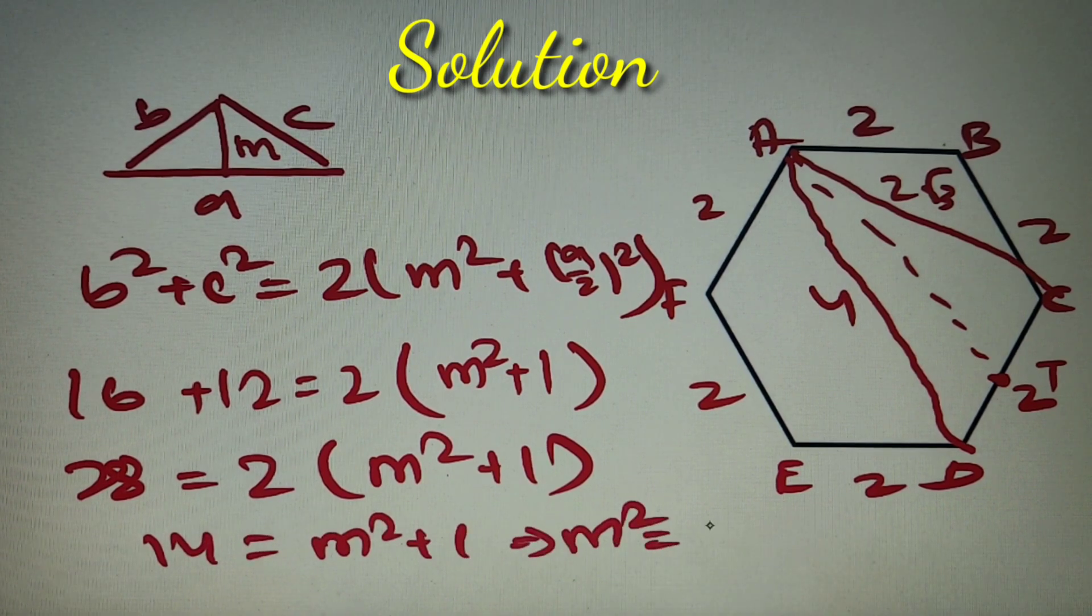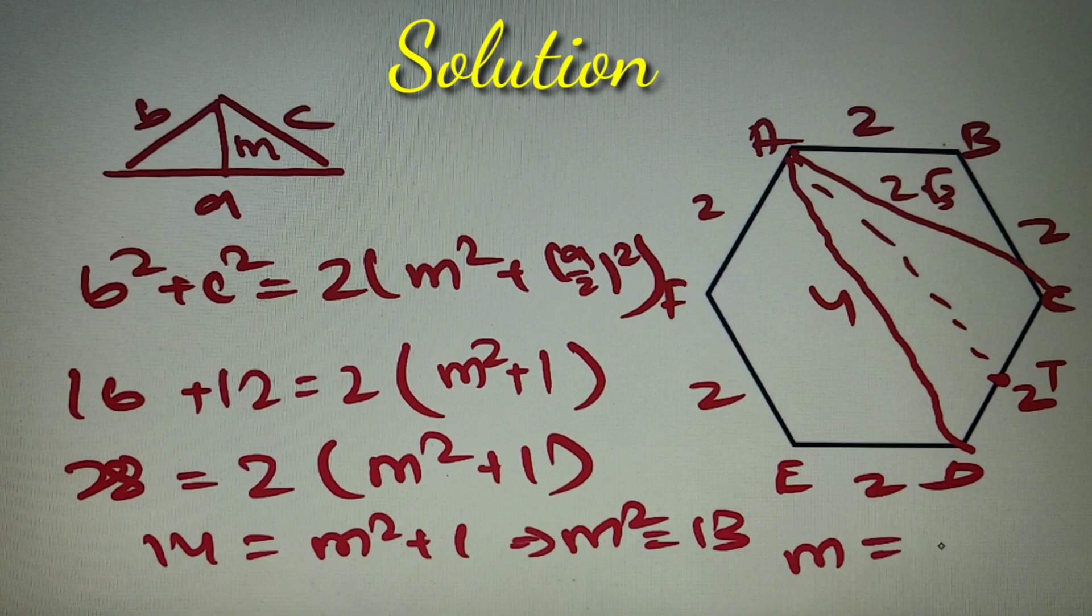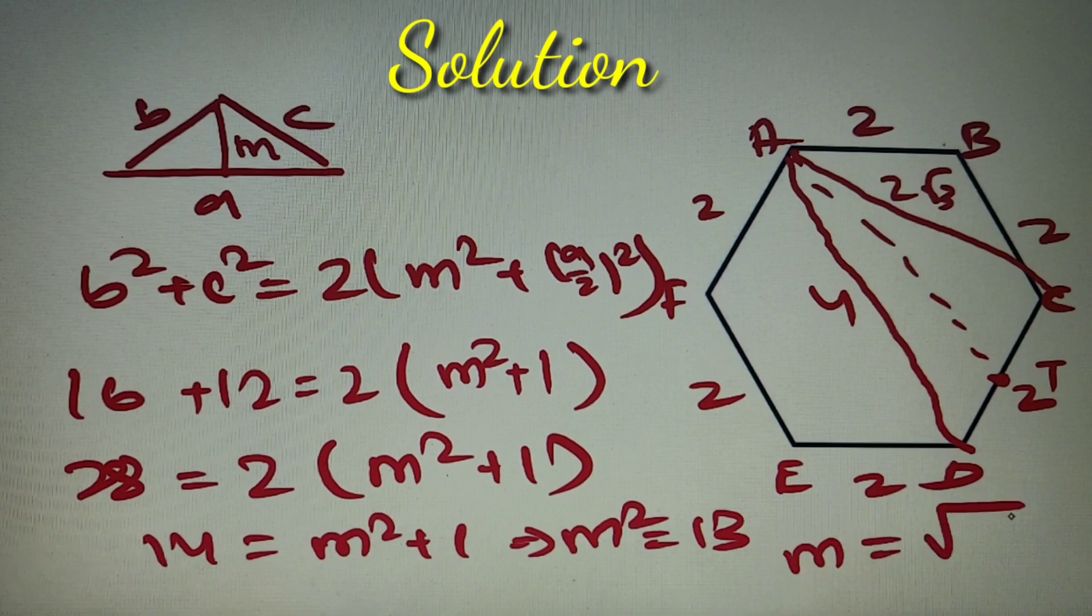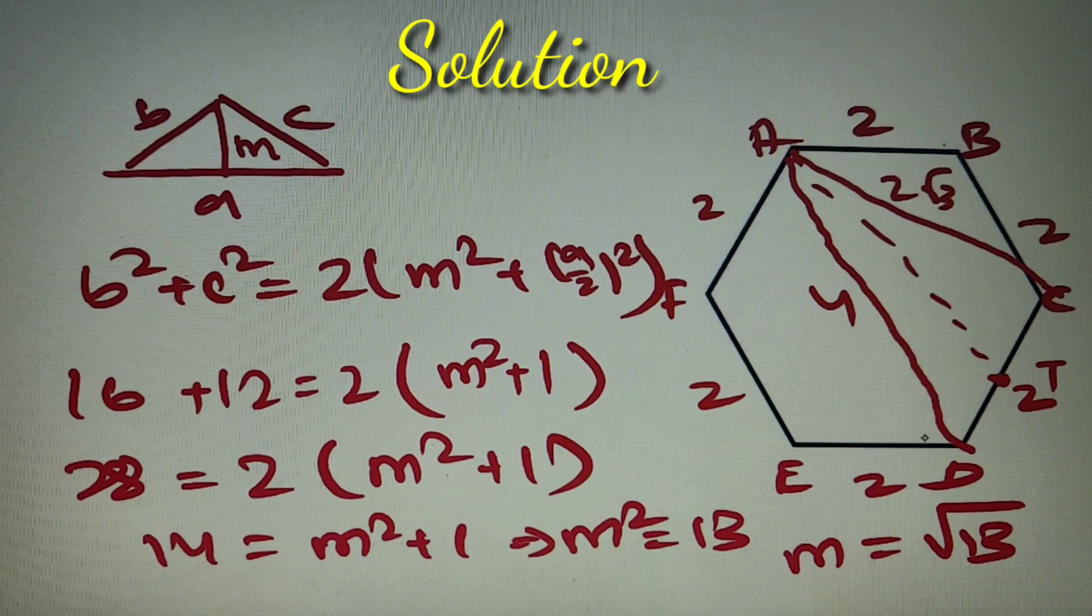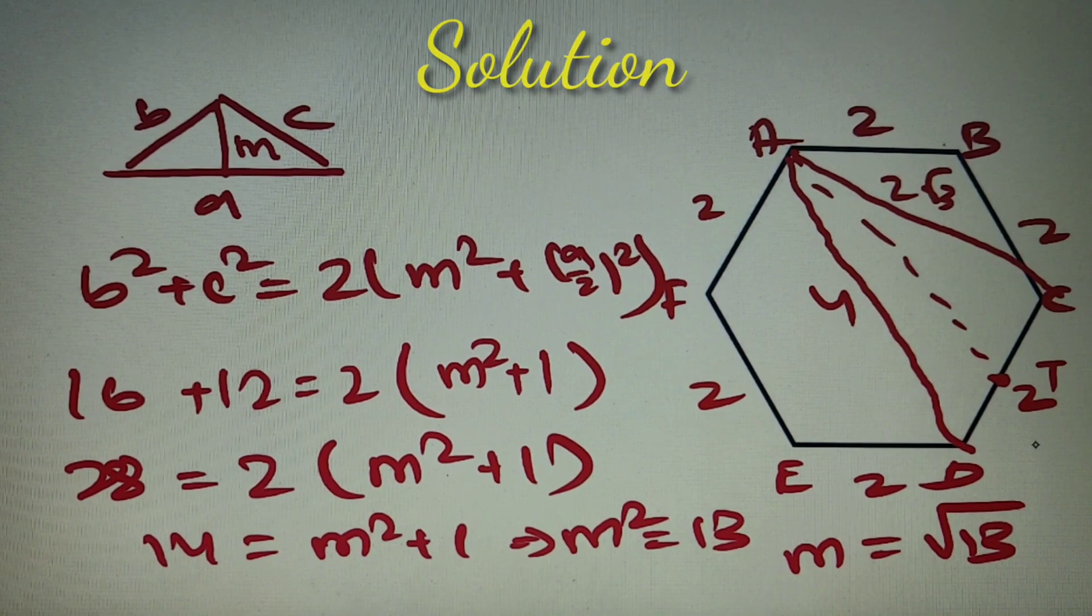The value of m square is equal to 13, or we can say that the length of the median AT is equal to root 13, and according to our given question, it is option number B. So our answer is option number B root 13.